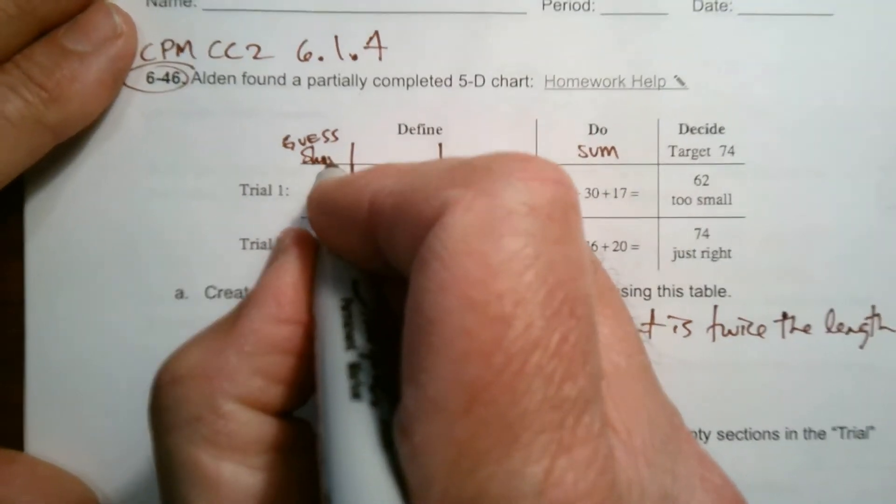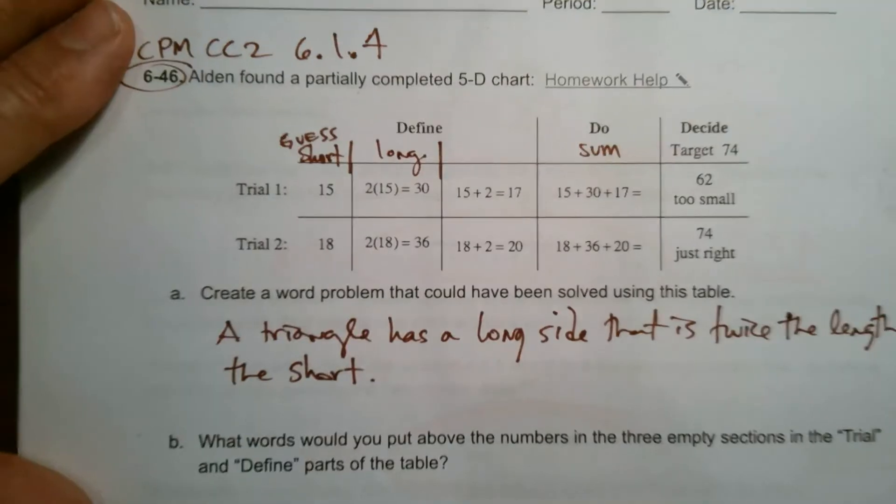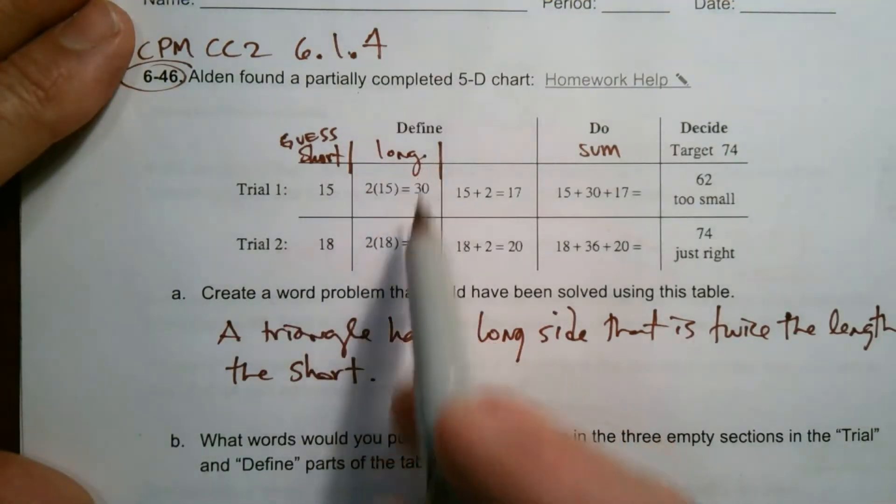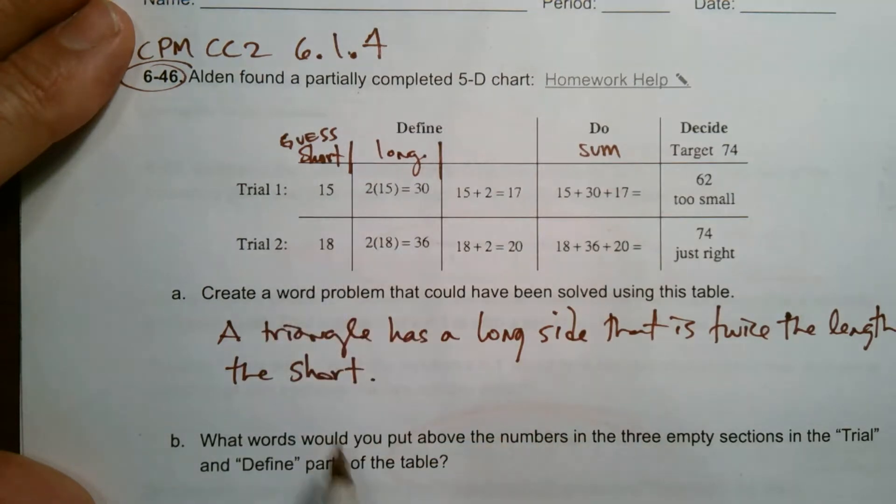So this is the short side. This is where I would call this the short side and it's twice the length. So that's the long side. So that's the short side. That's the long side based on what I'm seeing the math here. So a triangle has a long side that is twice the length of the short side, right?